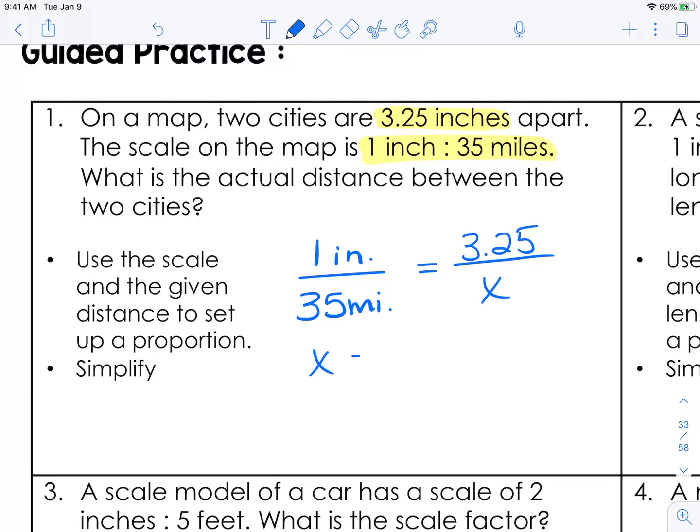One times x is just x. 35 times 3.25 is 113.75. So the answer here, the distance between these two cities in real life is 113.75 miles. So all you're doing is setting up a proportion here and solving.